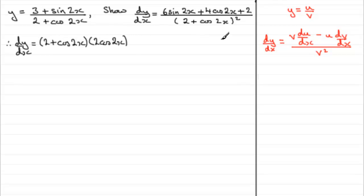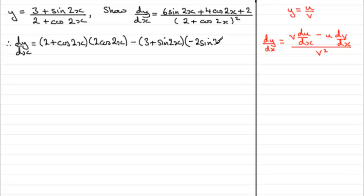Then we subtract the top of the fraction (3 plus sine 2x) multiplied by the differential of the bottom. The differential of 2 is 0, and the differential of cos 2x is minus 2 sine 2x — again, a standard result. All of that is divided by the denominator squared: (2 plus cos 2x) all squared.